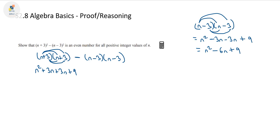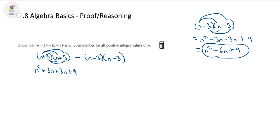Now, this negative sign means we're subtracting the whole thing, not just the first term. So I'm going to introduce square brackets: minus [n² - 6n + 9]. We have to subtract everything inside this quadratic — that's another common mistake students make.